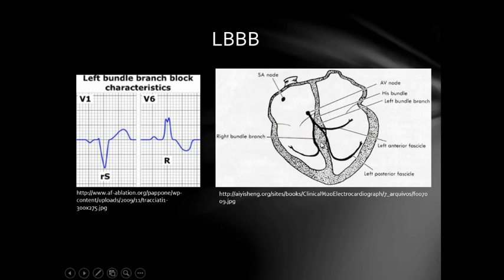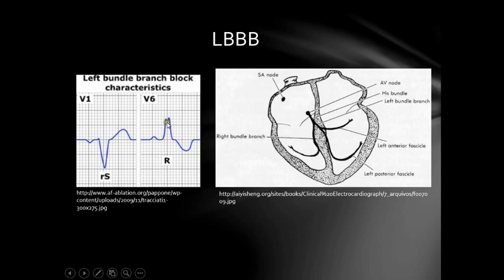Therefore, when the IVS is depolarized, you're going to have the first R-wave. Since the depolarization wave is moving towards the Left Ventricle and towards V6 — which is looking at the Left Ventricle — you're going to have an upward deflection. That's the first R-wave, representing IVS depolarization. Then you have an S-wave representing normal right ventricular depolarization, giving you a small R-wave in V1 and a small S-wave in V6.